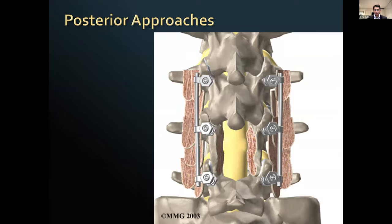Posterior approaches can also be used for the spine. We can either do simple decompressions such as a laminectomy of the spinal cord or individual nerve roots, or we can do this in association with fixation and fusion. These operations are typically more painful, but many segments can be treated quickly; however, you can't approach anterior pathology very well from this direction.